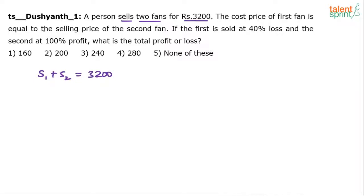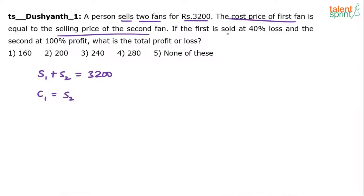The cost price of the first fan is equal to the selling price of the second fan. So we write C1 equals S2, where C1 is the cost price of the first fan and S2 is the selling price of the second fan.